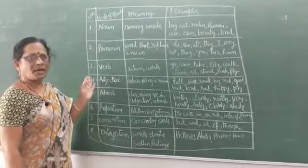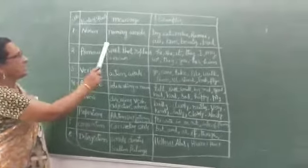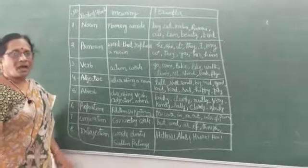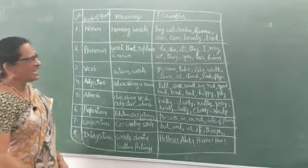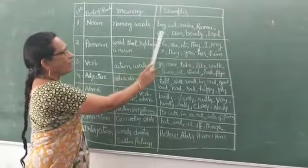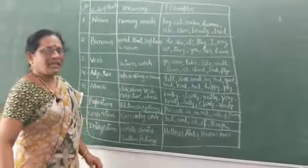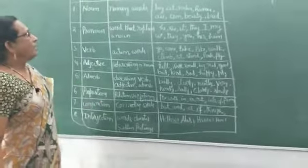The first one is parts of speech which is noun. Noun means naming verse. The noun denotes naming verse. Names means any names of folk, boy, cat, India, Hama, air, island, beauty, bird, any name of anything is called noun.